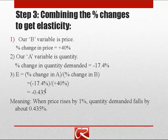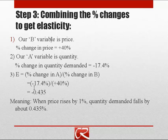Let me pause to note an irrational historical convention. Among economists, there's an attitude that everybody knows the demand curve slopes down and that raising prices decreases quantity demanded. So economists often talk about the elasticity of demand as 0.435, omitting or suppressing the negative sign — elasticities are often reported in absolute value terms. I will always try to retain the negative sign, but be aware that some textbooks may report things in absolute value terms.